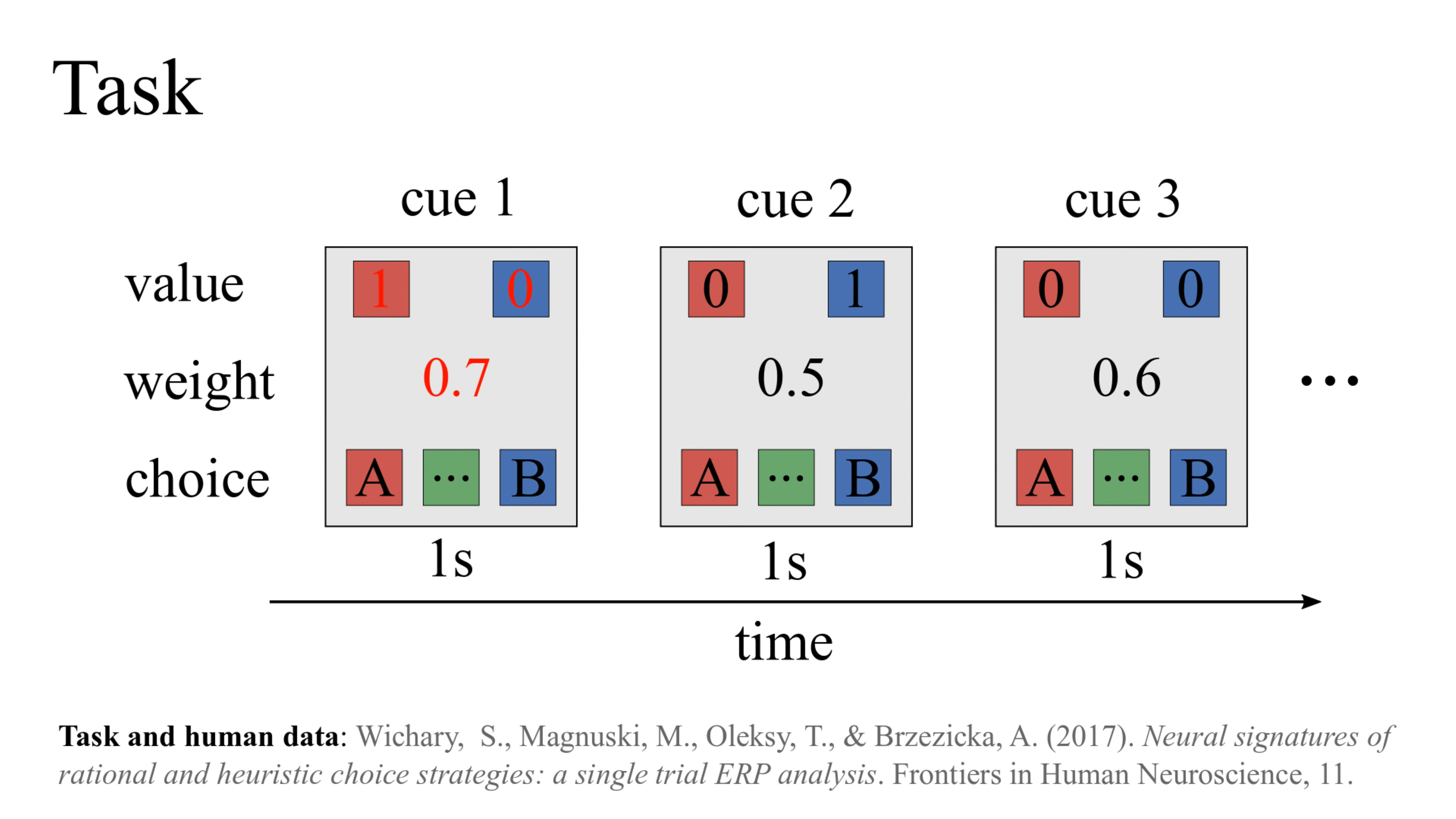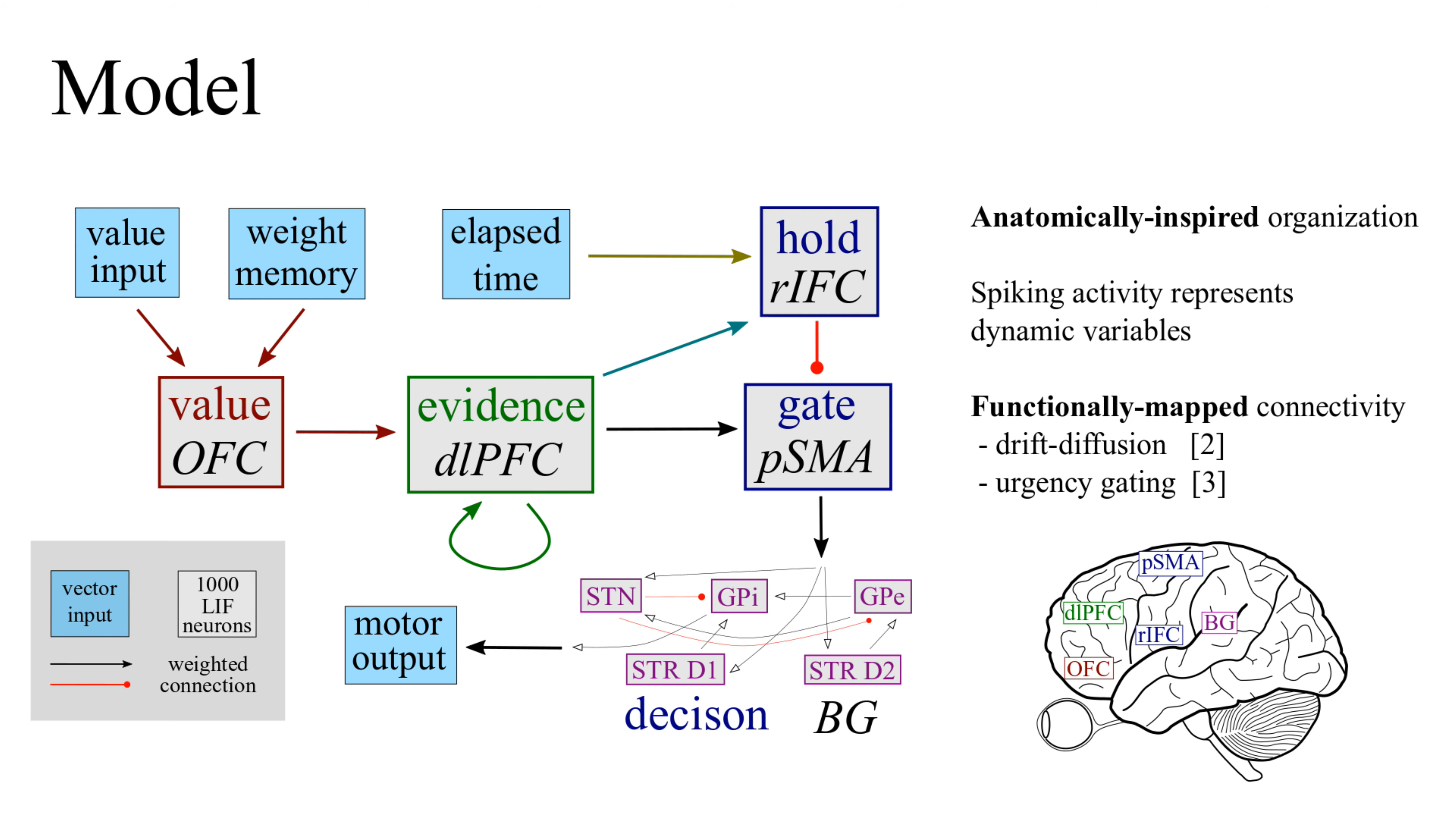For each cue, the participant sees the values of option A and B and recalls the cue's weight from pre-trial instructions. They then choose to select A, select B, or request more information. The task ends when a selection is made, with the correct answer being the option with the greatest sum of weighted values across all cues.